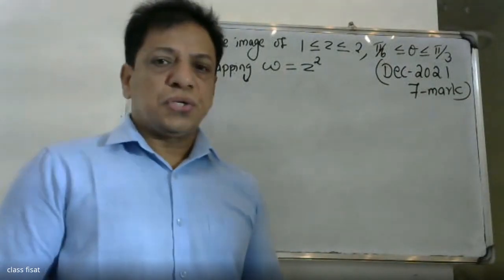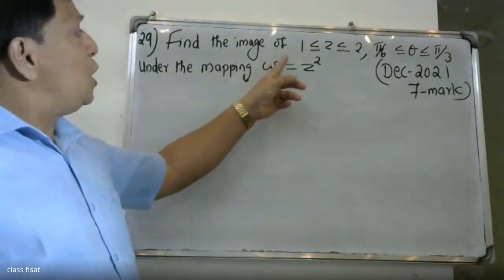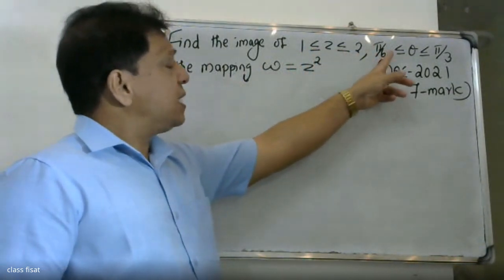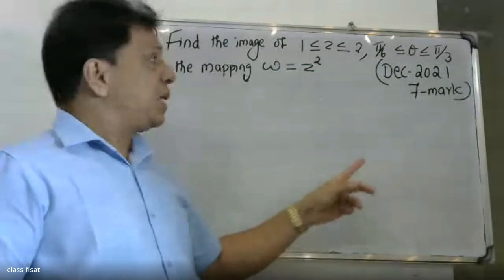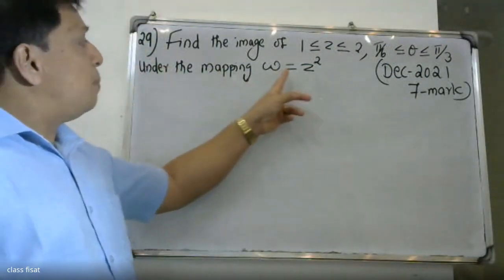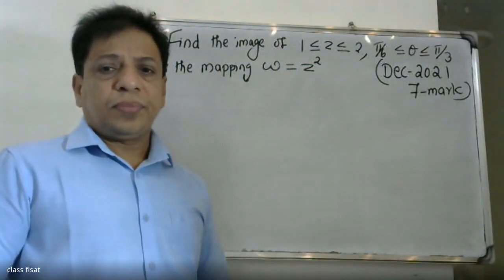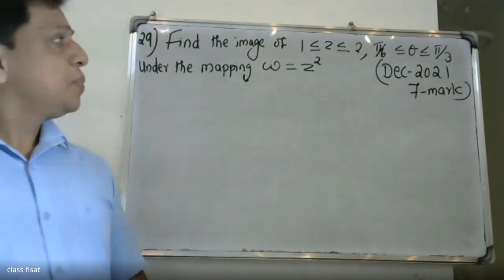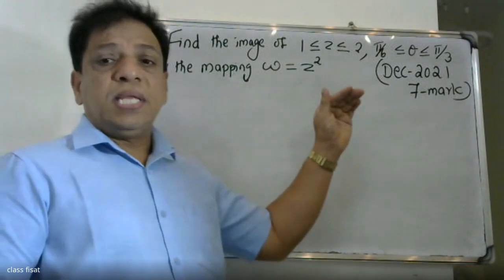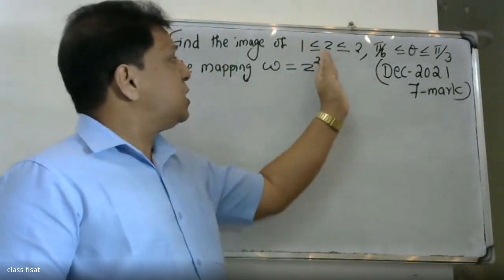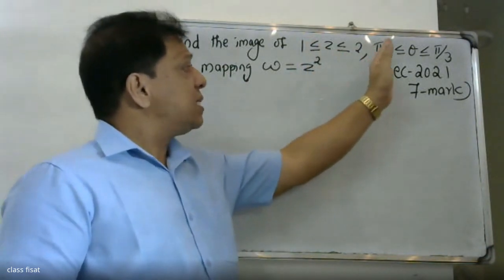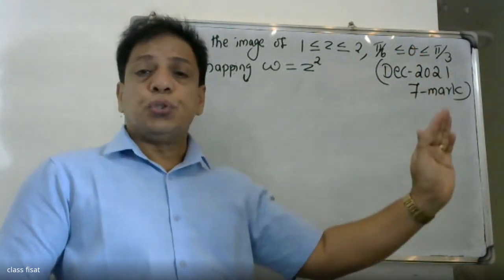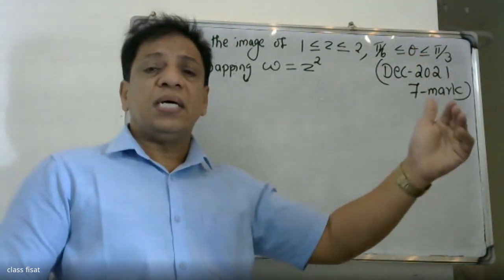Good morning students. The question is: find the image of the region 1 ≤ |z| ≤ 2, 5π/6 ≤ θ ≤ 5π/3, under the mapping w = z². The question asks us to find how this region in the z-plane is transferred into the w-plane.